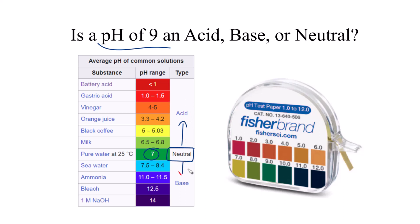Anything above 7, that'll be a base. So we have a pH of 9, that means we'll have a base, also called an alkaline solution.